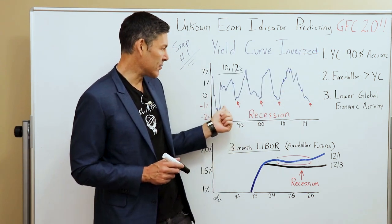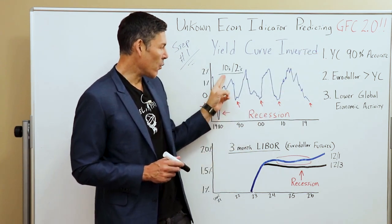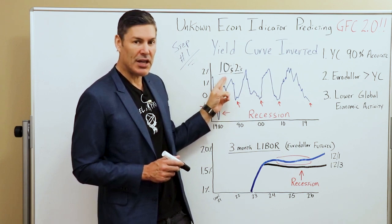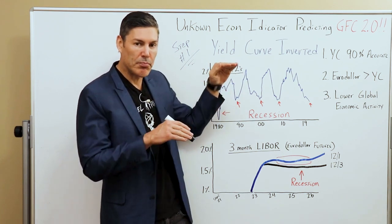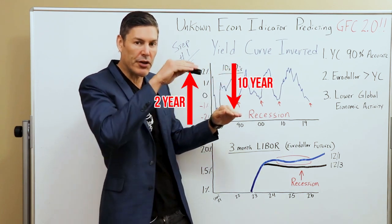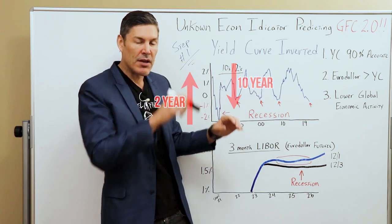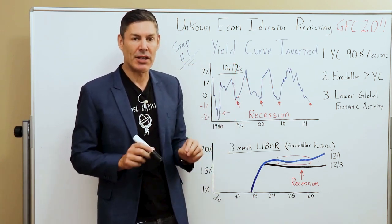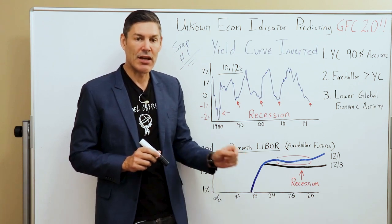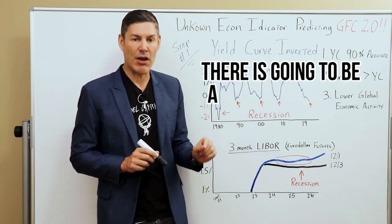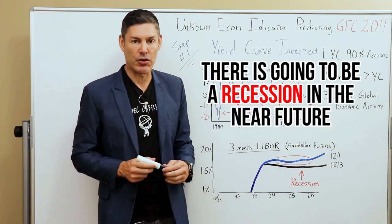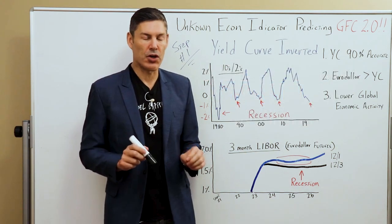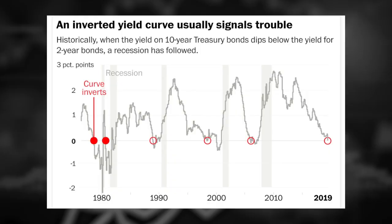This simply shows us the difference between the yield on the 10-year treasury and the two-year treasury. This is an indicator that historically has been 90% plus accurate. So when this inverts — meaning when the yield on the 10-year treasury goes below the yield on the two-year treasury — this is the bond market predicting that there is going to be a recession in the near future. The first inversion on this chart goes back to 1980, and of course we had a recession right after that.